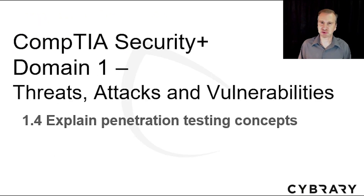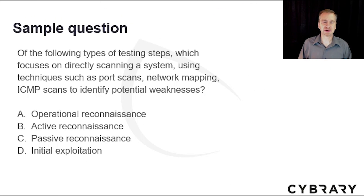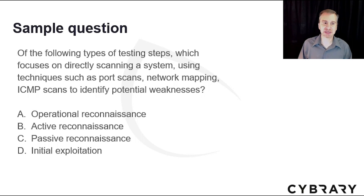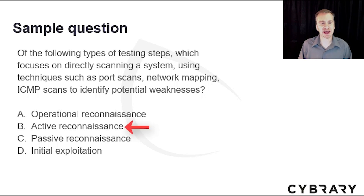In this video, I discussed section 1.4: explain penetration testing concepts. Let's practice on a few sample quiz questions. Question 1: Of the following types of testing steps, which focuses on directly scanning a system using techniques such as port scans, network mapping, and ICMP scans to identify potential weaknesses? The answer is B, active reconnaissance — this is the definition for active reconnaissance.